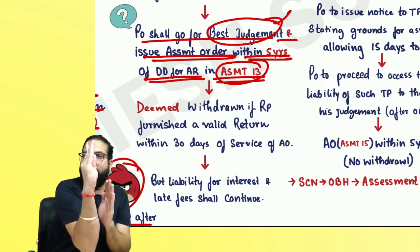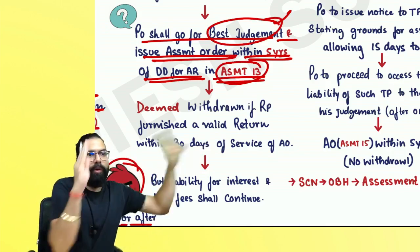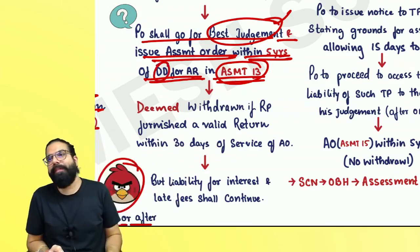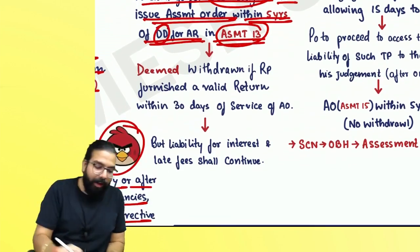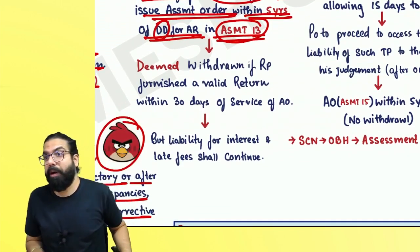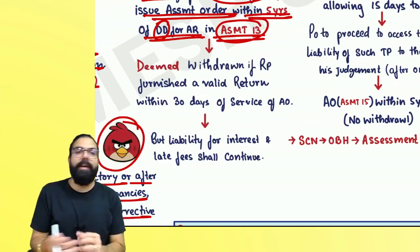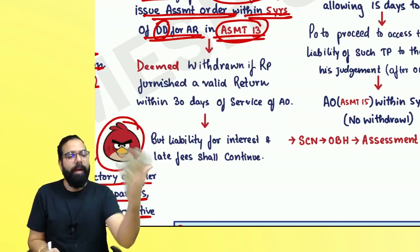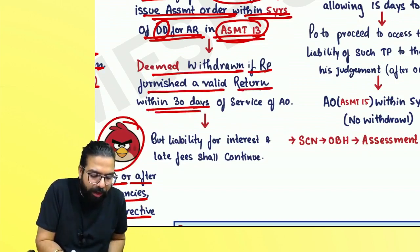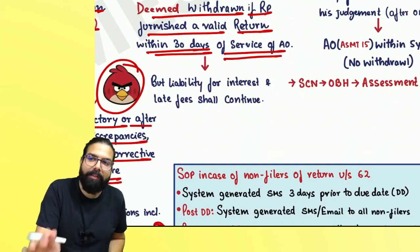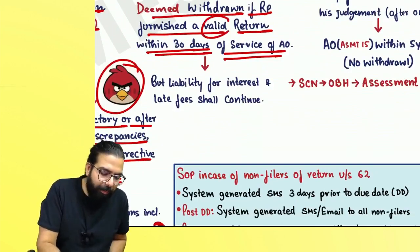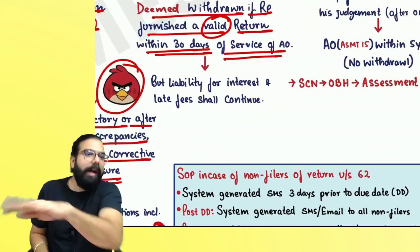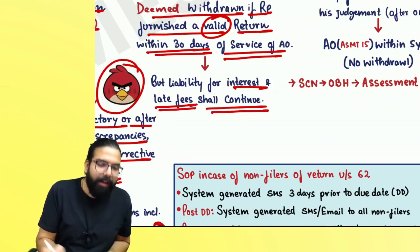If the annual return's due date is this year, from that date — 1 year, 2 years, 3 years, 4 years, 5 years. If the due date is extended, then from the extended due date, 5 years. If you did not file the return and the officer gave you an assessment order, within 30 days if you go online and file a valid return — paying your taxes and filing — the assessment order will be deemed to be withdrawn. But the liability for interest and late fees shall still continue.